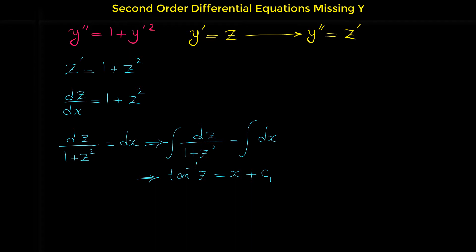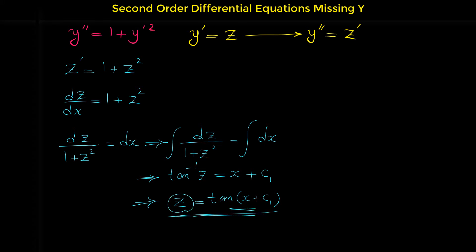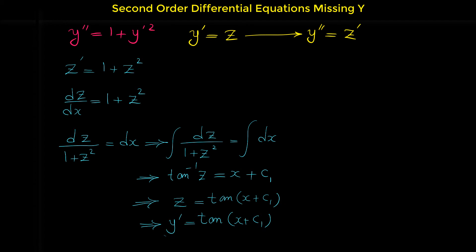If we want to find z explicitly in terms of x, we need to get rid of this inverse tangent. Taking tangent from both sides of the relation, since inverse tangent of z equals that expression, we get z equals tangent of (x plus c1). Note that in this differential equation we are looking for y, not z. We found z in terms of x, but z is actually y prime. So far we have y prime equals tangent of (x plus c1). To find y, since we know the derivative of y equals this, we need to integrate.